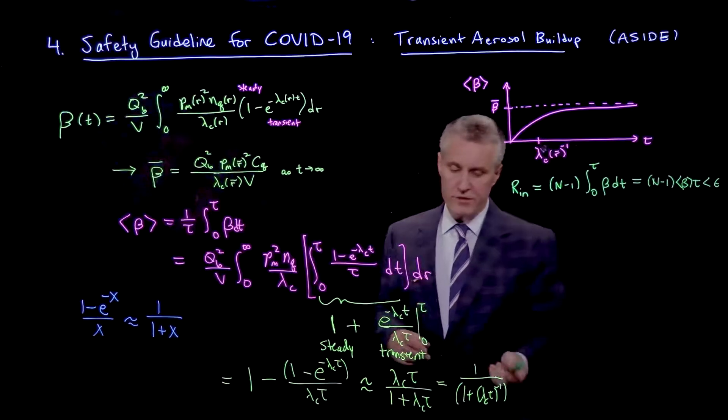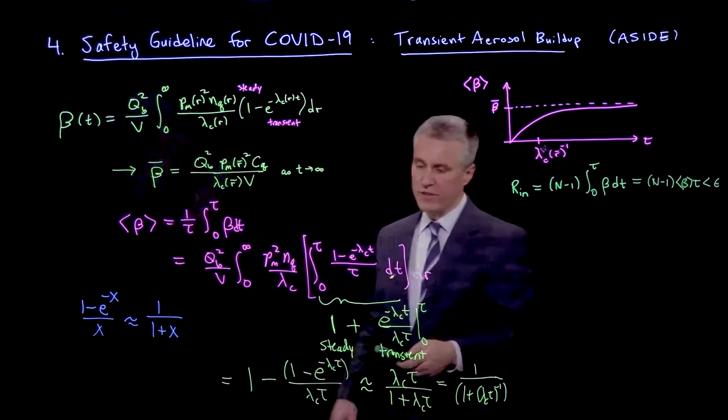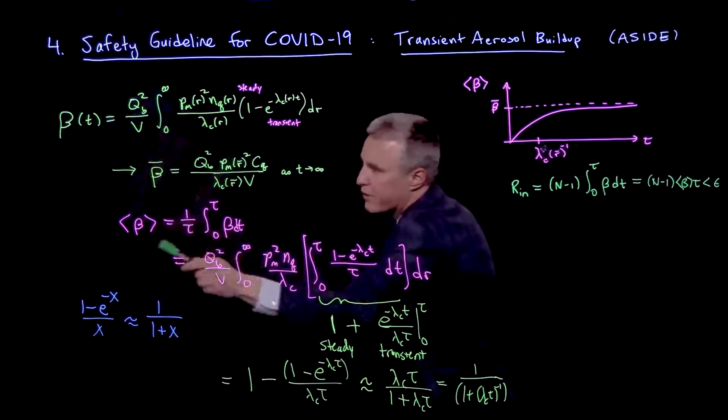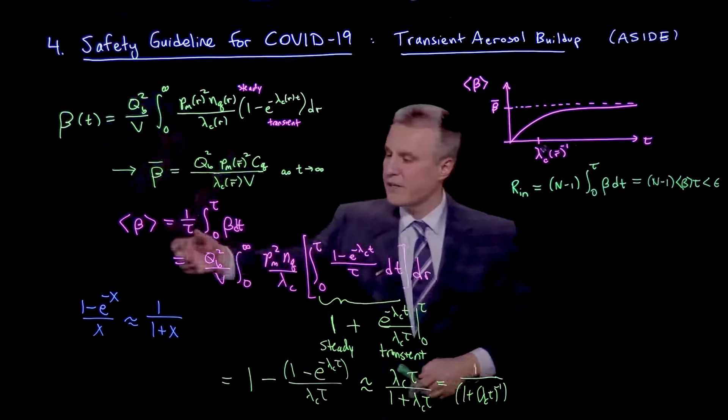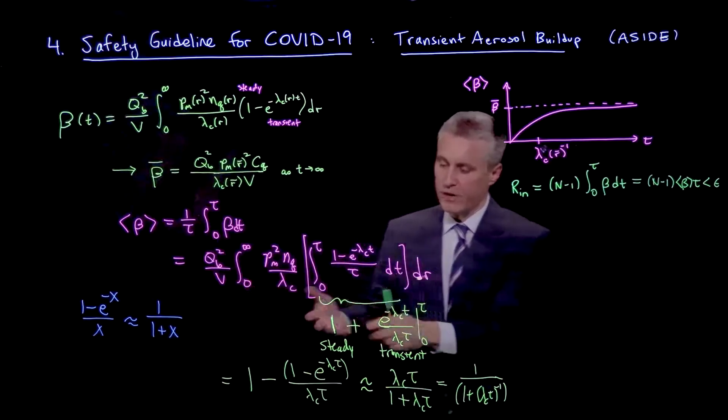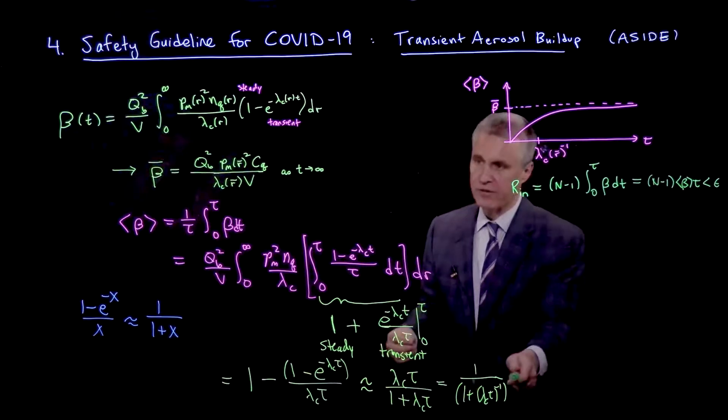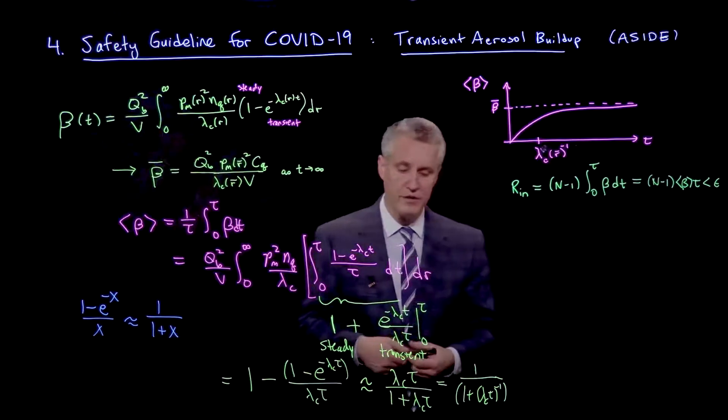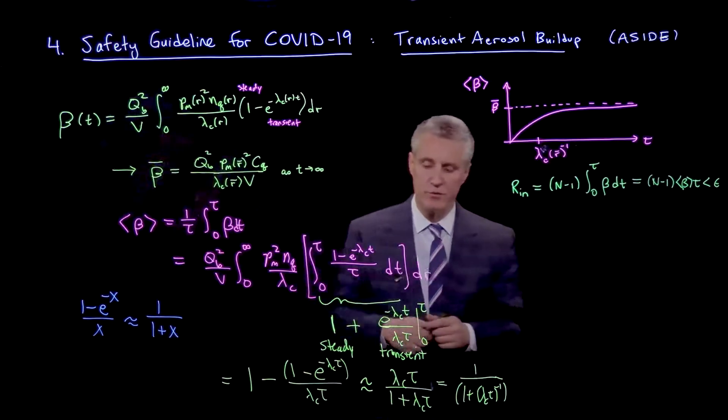And so what that means, then, is using this result, you can see that I just get the rest of it. So if I look at the expression for beta bracket, it's just the steady state expression times this factor. So basically, this is kind of the factor that corrects for transient effects, again, with just a simple approximation.